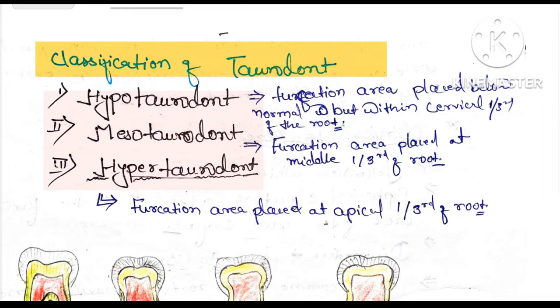Now the classification of taurodont — there are three classifications: hypotaurodont, mesotaurodont, and hypertaurodont. This is quite easy, just 2 minutes.